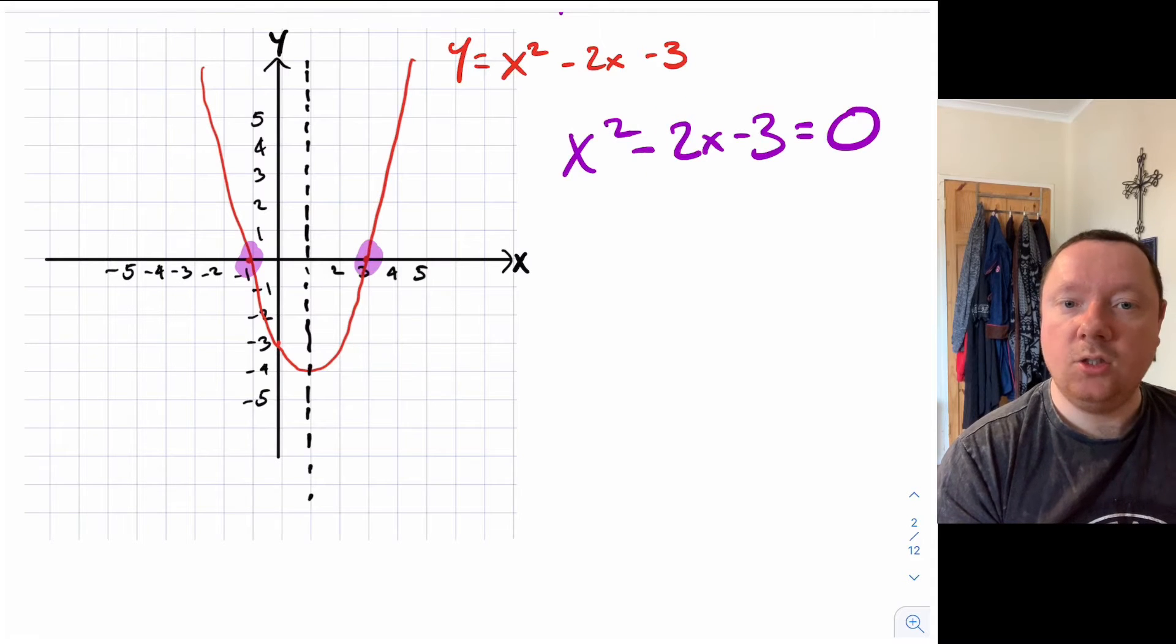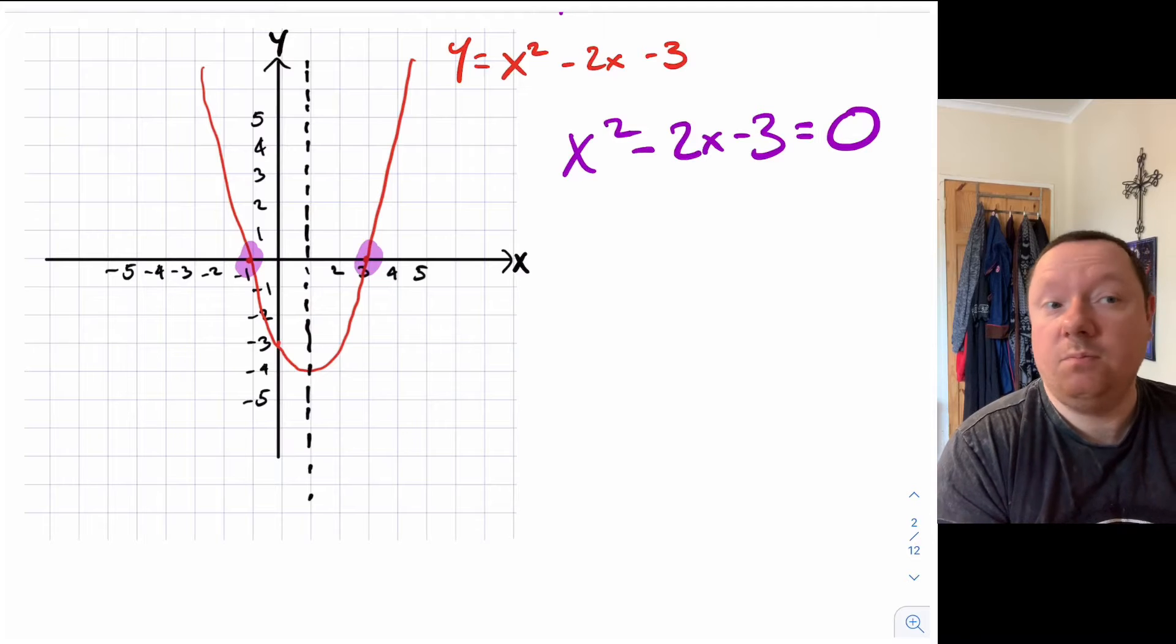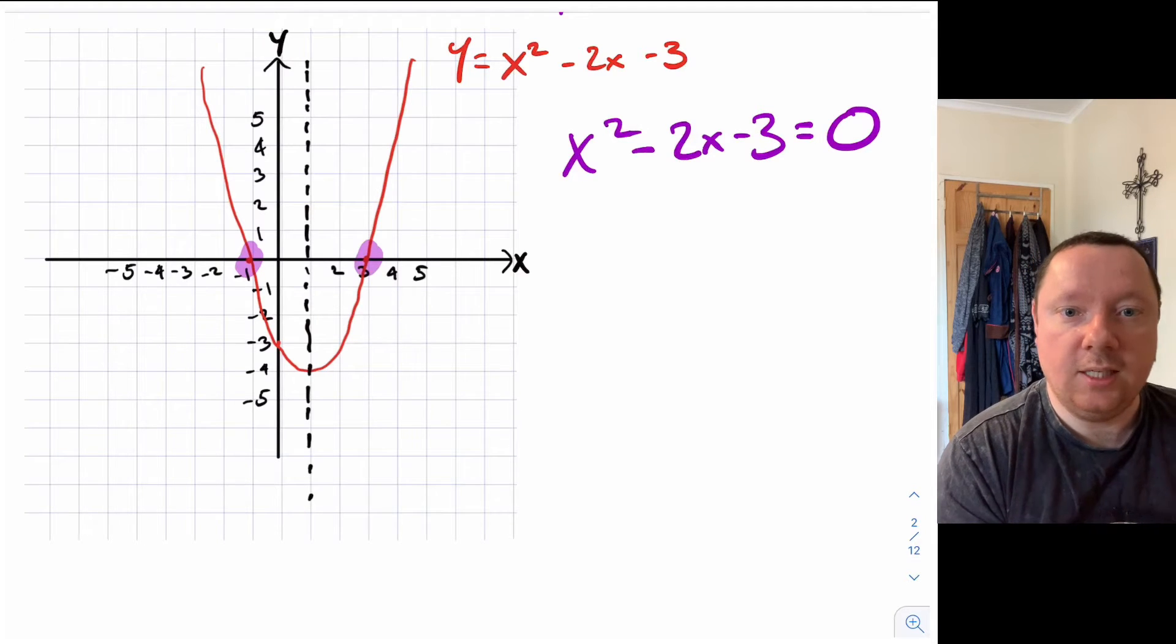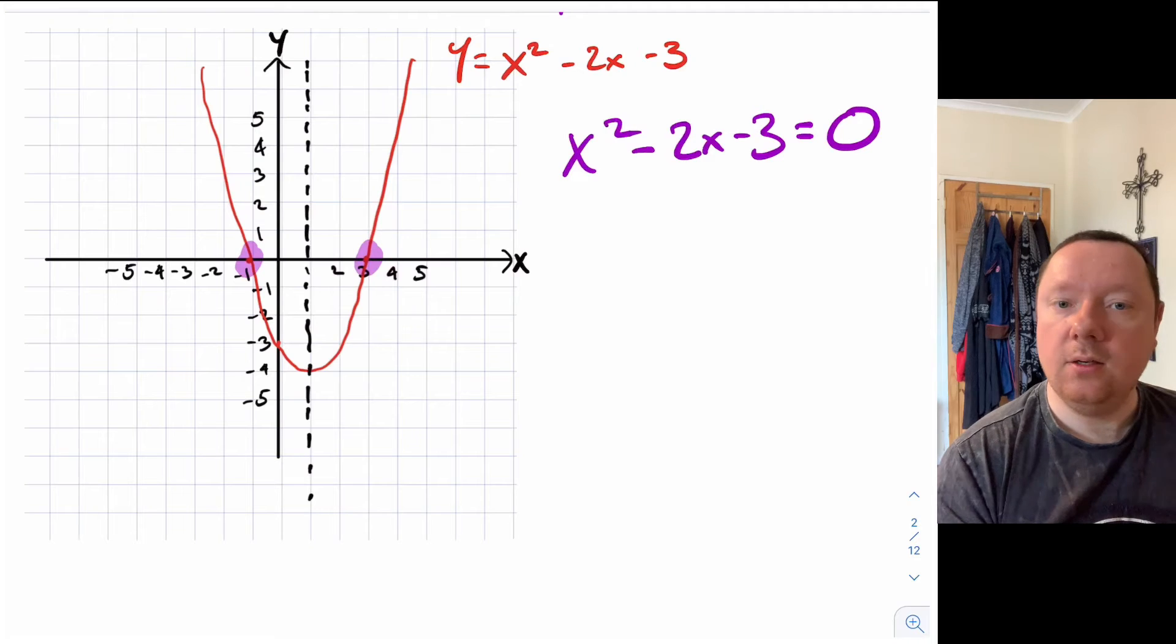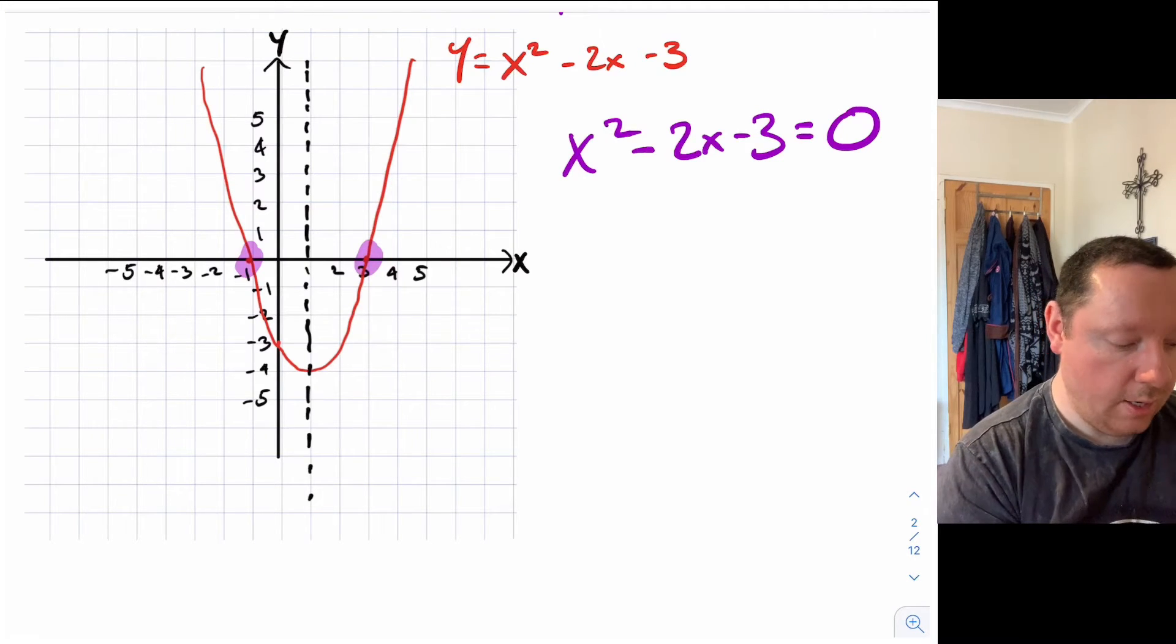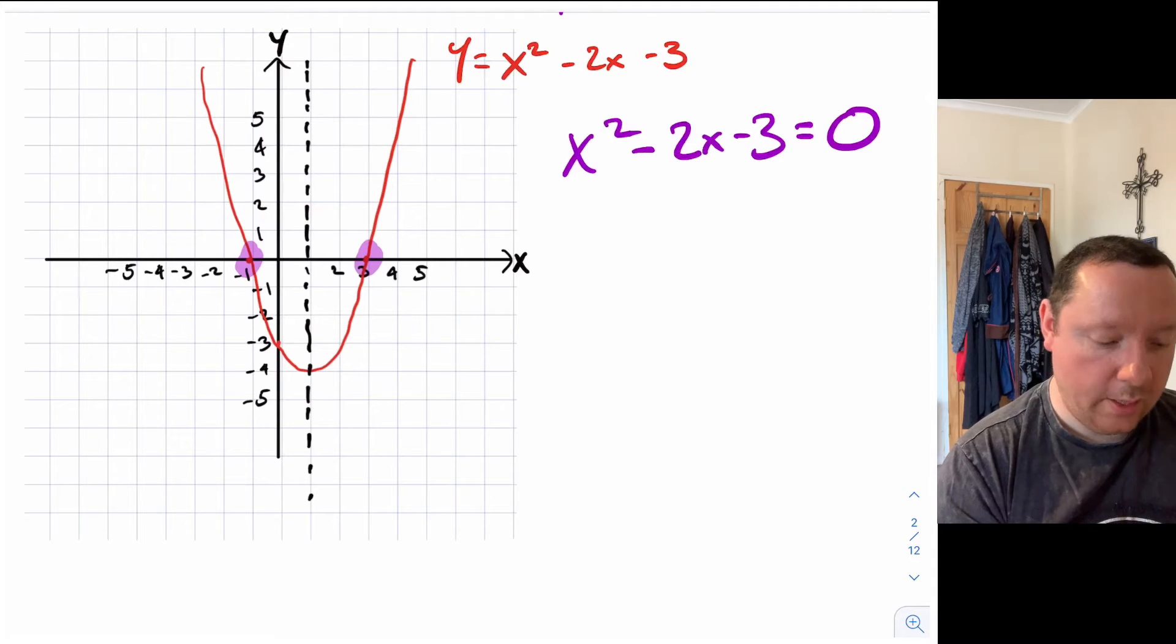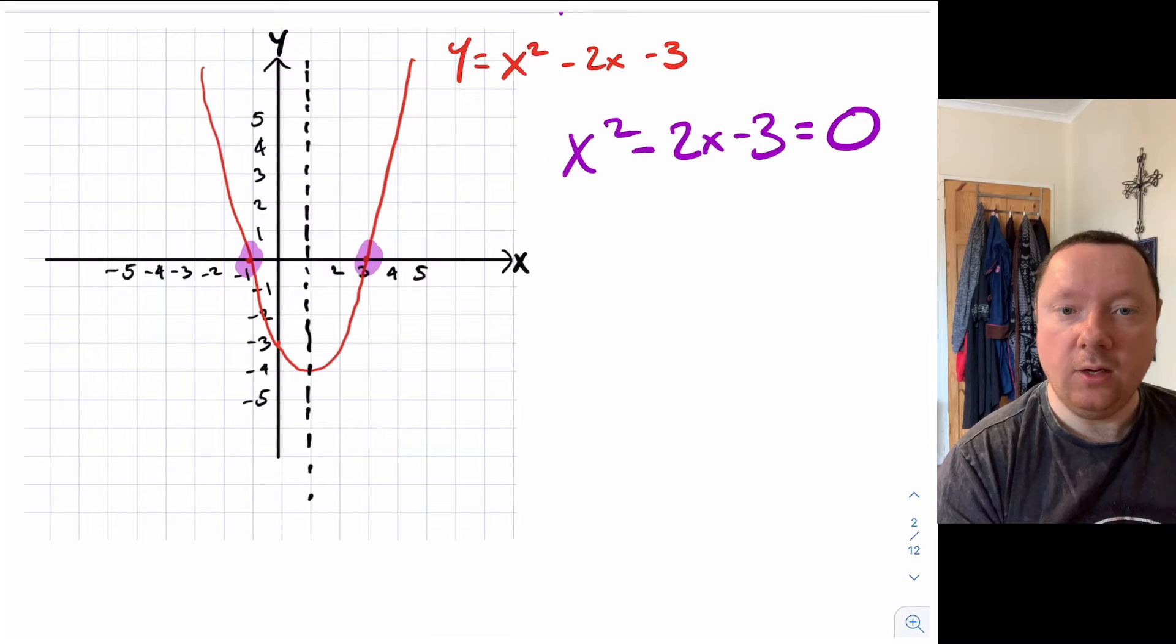But completing the square will allow us to get a solution because the solution could be like 2.3, 4.7, 6.8 something like that. There'll always be two solutions obviously, one here and one here, two places it cuts the x-axis. One of the time that's not true is when your curve's turning point touches the x-axis. So I'm going to complete the square on this one now just to show you how this works and then go through a couple examples where the answer isn't a whole number.